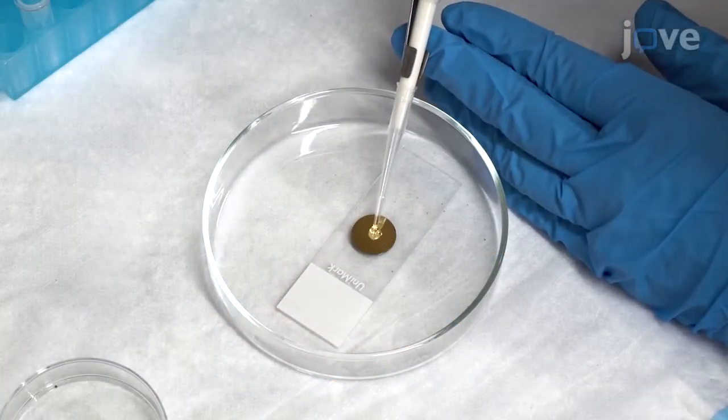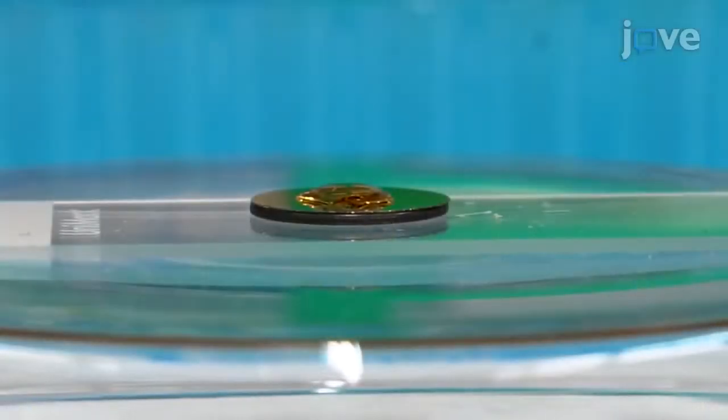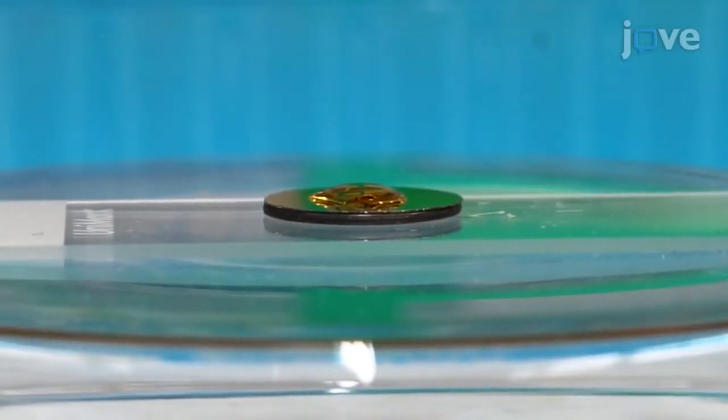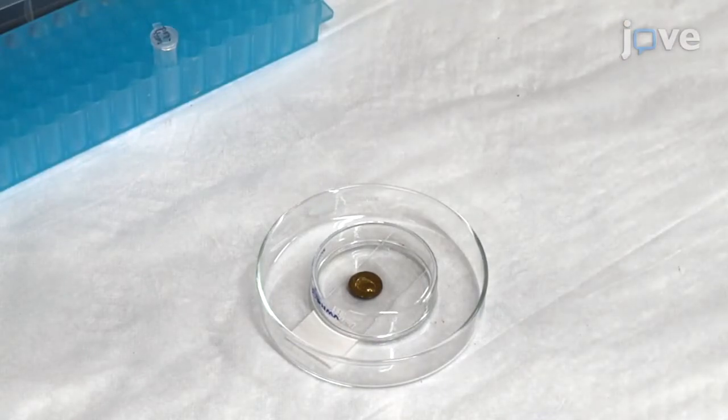Apply a 60 µL drop of the protein solution to the center of the slide. Take care not to let the liquid slip between the slide and the iron disc, as this will lead to uncontrolled sample movements during the experiment. Let the sample sit at room temperature for at least 10 minutes.